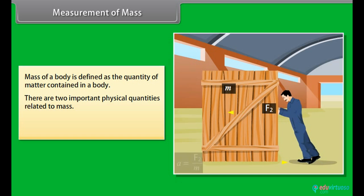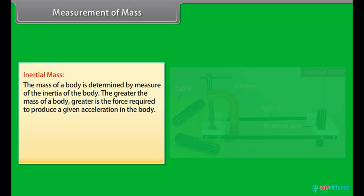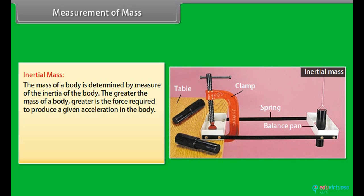Measurement of mass. Mass of a body is defined as the quantity of matter contained in a body. There are two important physical quantities related to mass of a body: inertial mass and gravitational mass. Inertial mass: the mass of the body is determined by measure of the inertia of the body. The greater the mass of a body, greater is the force required to produce a given acceleration in the body. F = MA, or M = F/A. Thus a very heavy body has a larger inertial mass than a light body. In order to measure the inertial mass of a body, we make use of inertial balance.